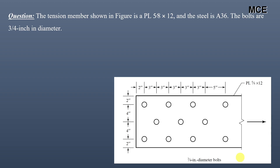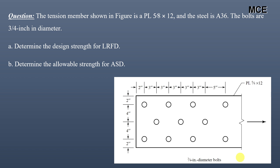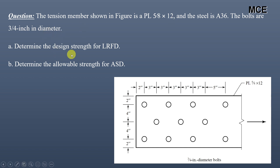Hello and welcome back to the Master Civil Engineering. In this video we will learn how to find the design and allowable strength for a staggered connection using AISC 360. The given problem states that the tension member shown in the figure is a plate 5/8 × 12, the steel used is A36, the bolts are 3/4 inch in diameter, and we have to find the design strength for LRFD and the allowable strength for ASD.